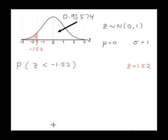Just remember this. If you ever shade less than a half of the distribution, you must do 1 minus the probability that you've looked up from the tables. So 1 minus 0.93574 will give you the probability of the shaded region.